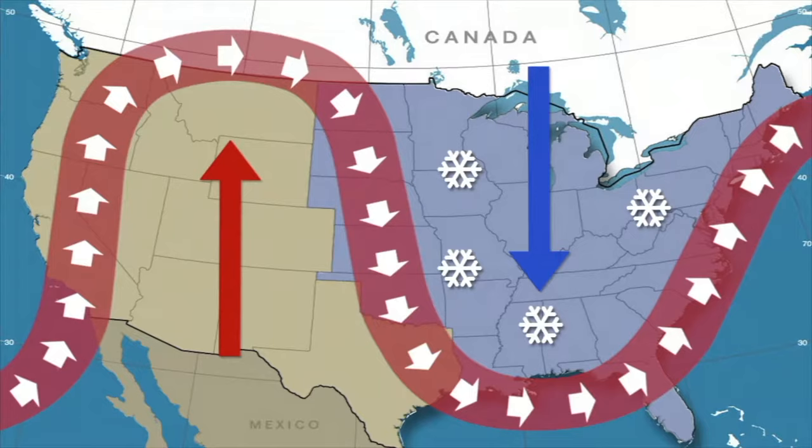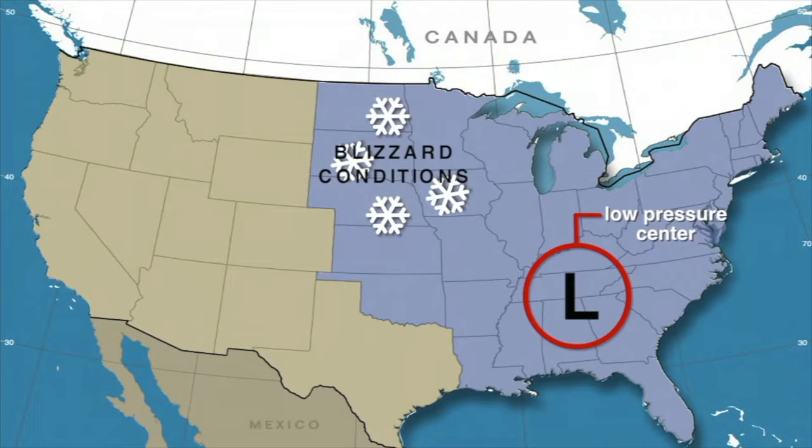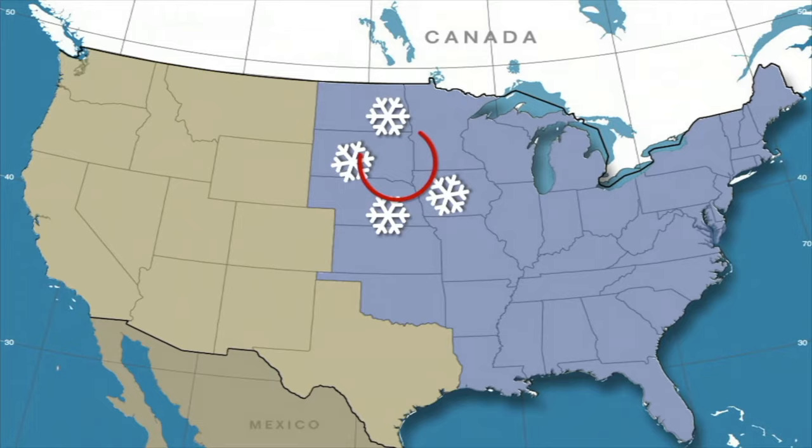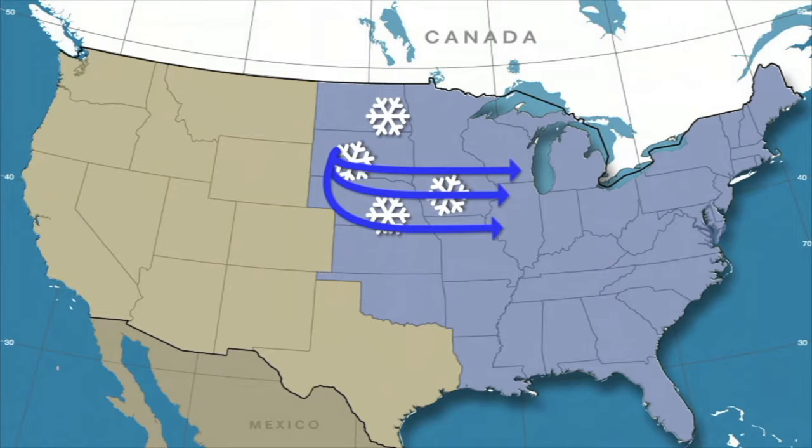That is why blizzards often come after warm winter weather. In a strong storm system, blizzard conditions often arise to the northwest of a low-pressure center. The difference between the lower pressure inside the storm and higher pressure to the west causes air to move fast, resulting in strong winds. The winds associated with this steep pressure gradient produce drifting snow and limited visibility.